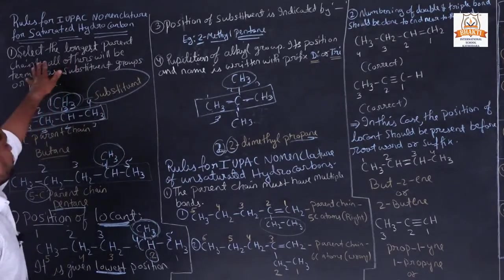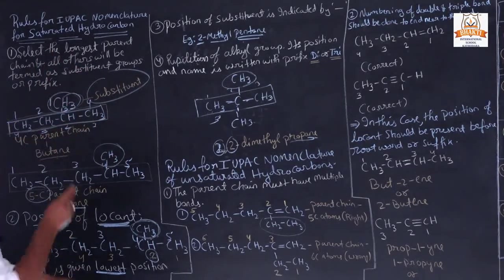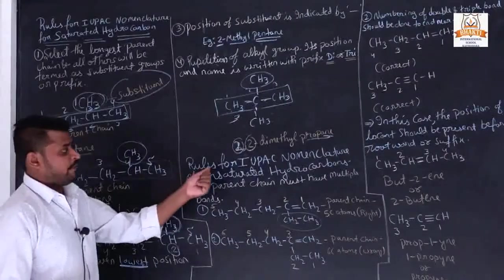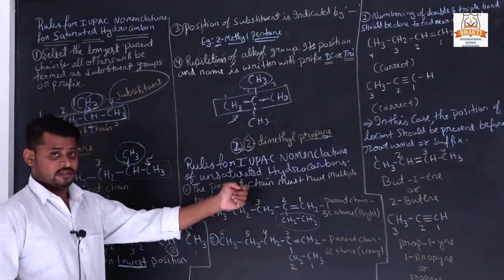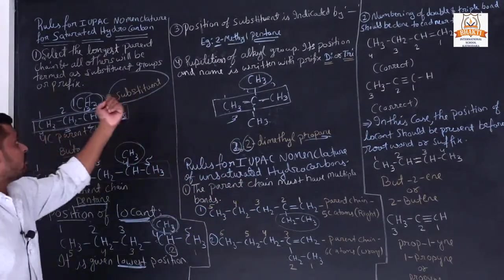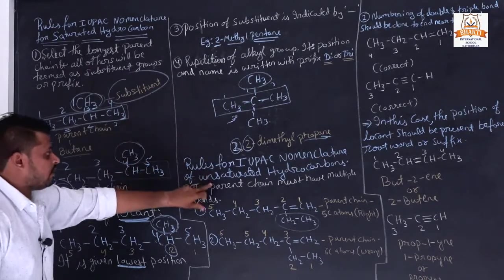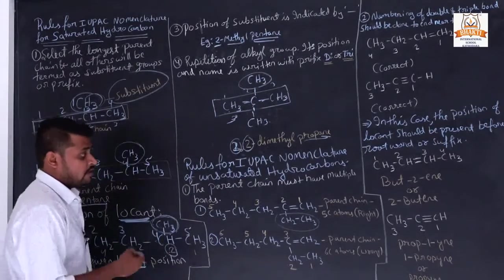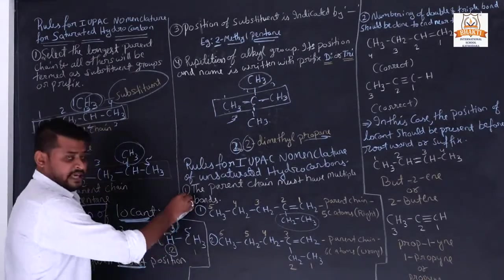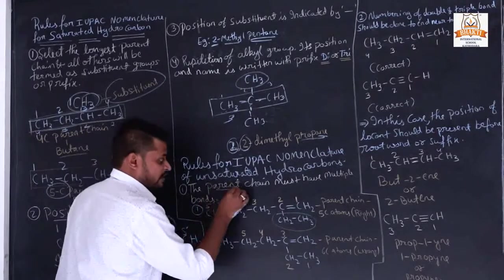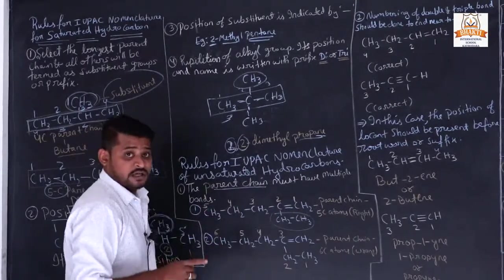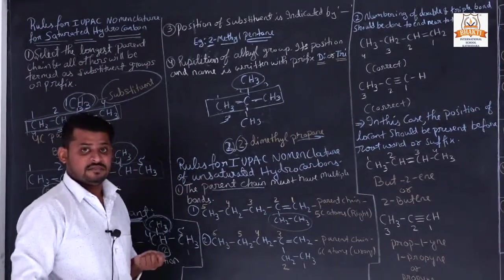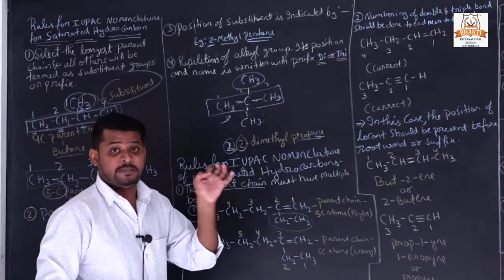This is the rule for naming saturated hydrocarbons when two or more substituents are present. Now our last topic: rules for IUPAC nomenclature for unsaturated hydrocarbons. The rule is the same — first make a parent chain — but the main condition is that the multiple bonds must be present within the parent chain.